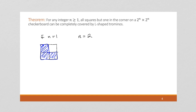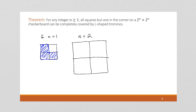If n equals 2, then 2 to the 2 is 4, so this is going to be a 4 by 4 square. Now we're going to want to start filling this up, which is getting harder to do.